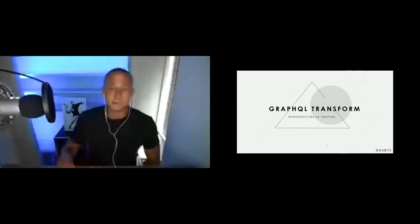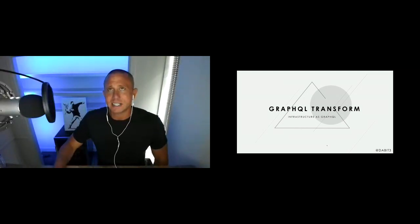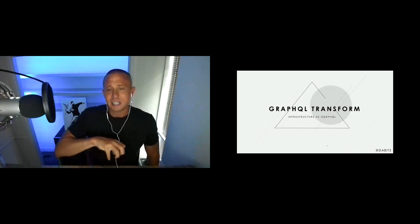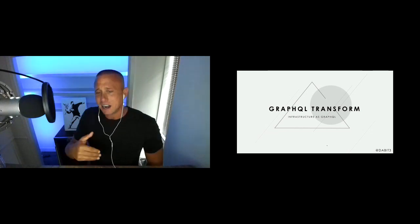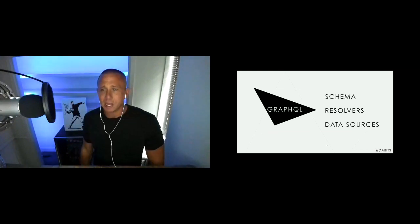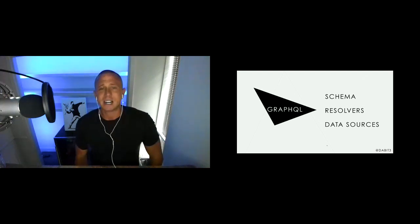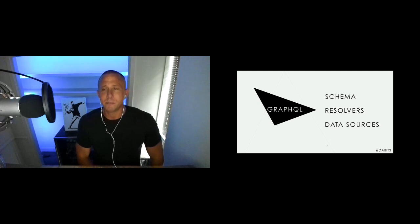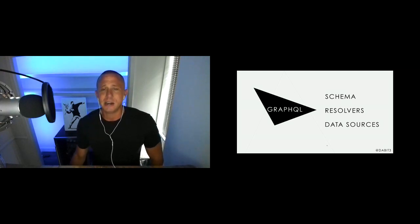Part of that tooling is the GraphQL Transform library — essentially 'infrastructure as GraphQL.' You've heard of infrastructure as code, where you write YAML or JSON key-value pairs and deploy infrastructure from that file. GraphQL Transform abstracts that a level higher and makes it even easier. If you've ever built a GraphQL API from scratch, you understand how tedious it is — that's why services like AppSync and Hasura exist in the first place.